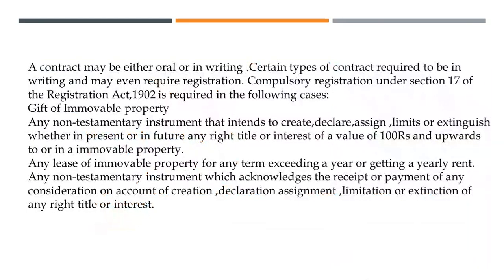Legal formalities: a contract can be either oral or in writing, but certain types of contracts must be in writing and may even require registration. Compulsory registration under Section 17 of the Registration Act of 1902 is required in the case of a gift of immovable property — like if somebody gifts you a building, flat, plot, or apartment. It has to be registered under the Act of 1902. Usually, registration takes place as per the value of the property, but for the initial stages, it can be done on a stamp paper of 100 rupees, which has to be notarized and registered in the court of law.